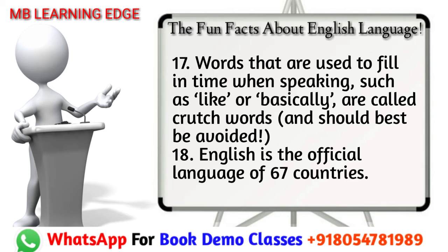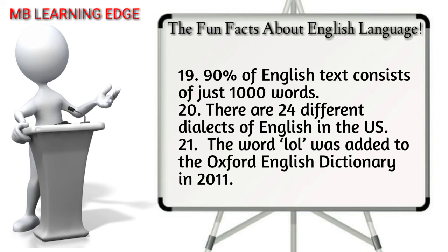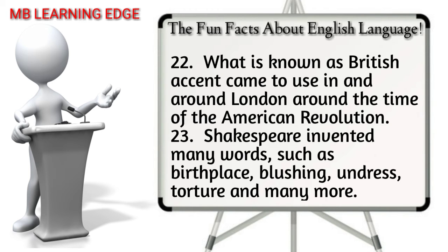17. Words used to fill in time when speaking, such as 'like' or 'basically,' are called crutch words and should best be avoided. 18. English is the official language of 67 countries. 19. 90 percent of English text consists of just 1,000 words. 20. There are 24 different dialects of English in the US. 21. The word 'lol' was added to the Oxford English Dictionary in 2011.